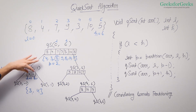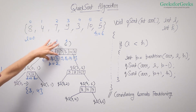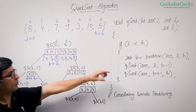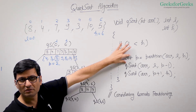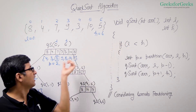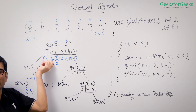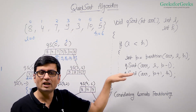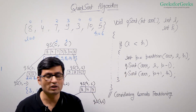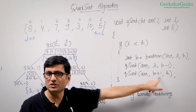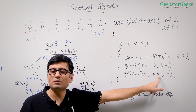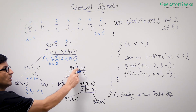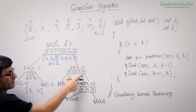Control gives back to the main caller, which has now finished the left part. The main function call, which was for 0 to 6, now makes a call for P plus 1 to H. P plus 1 is 3, so it calls from 3 to 6, meaning it will sort the sub-array containing 9, 8, 10, 7.